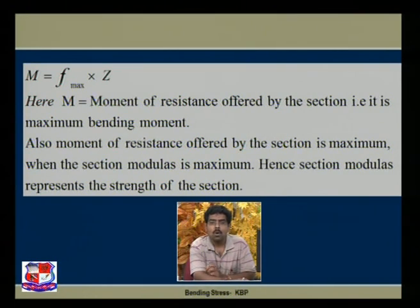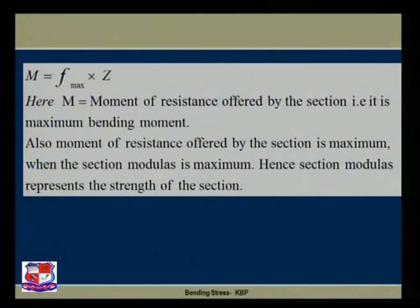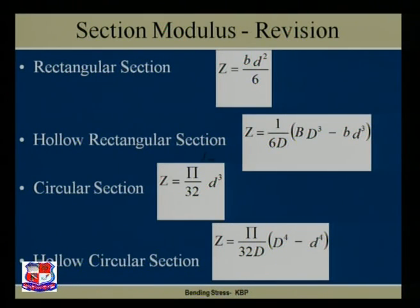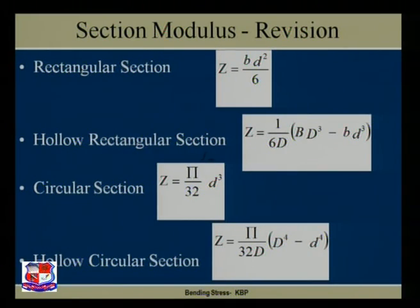We have defined section modulus for four known shapes. For a rectangular section, Z = (1/6) × b × d². For a hollow rectangular section, Z = (1/6d) × (BD³ − bd³), where B and D are the outer dimensions and b and d are the inner dimensions. For a solid circular section of diameter d, Z = (π/32) × d³. For a hollow circular section, Z = (π/32D) × (D⁴ − d⁴), where D is the outer diameter and d is the inner diameter.